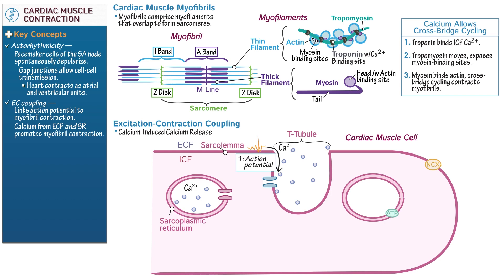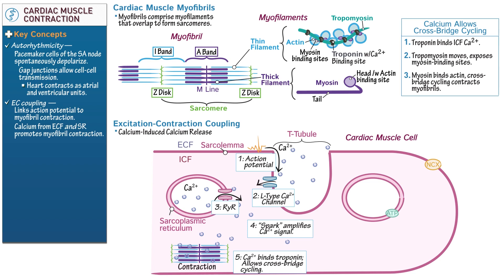Now we're ready to show the steps of EC coupling. First, an action potential is generated, typically by pacemaker cells in the sinoatrial node, and is transferred from cell to cell via gap junctions. As the action potential travels along the sarcolemma, it triggers the opening of the voltage-gated L-type calcium channels, allowing calcium to move down its electrochemical gradient into the cell. Calcium influx opens the ryanodine receptors on the sarcoplasmic reticulum, and large quantities of calcium ions move into the intracellular fluid. This calcium-induced calcium release creates a calcium spark, which amplifies the calcium signal. Calcium then binds troponin and ultimately allows cross-bridge cycling and sarcomere shortening to contract the myocardial cells.